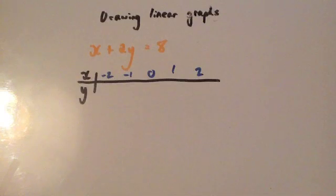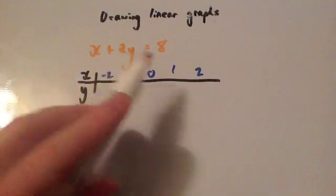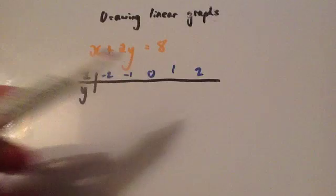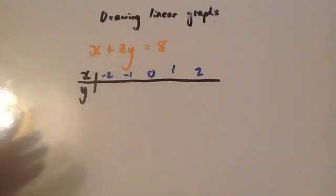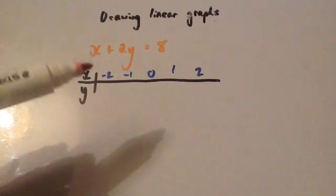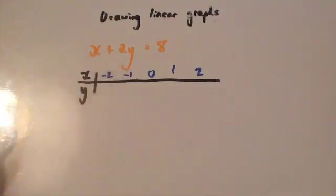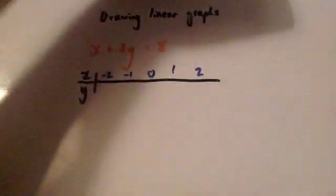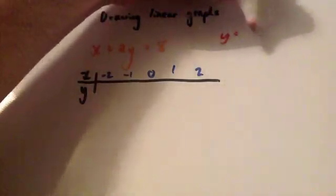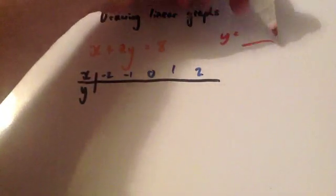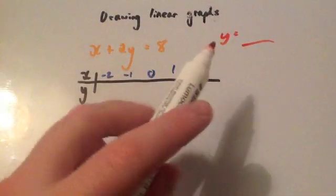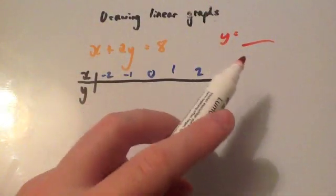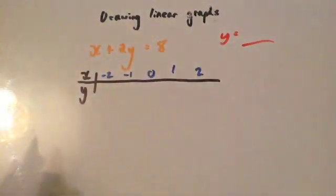We're now going to look at how to draw the other graph: x plus 2y equals 8. I've drawn an xy table again, because that's how we're going to be drawing graphs in this video. I always find it a lot easier when you get y to be the subject — that's y equals something. If you want to see how to do that, watch the video on Changing the Subject / Rearranging Formulae.